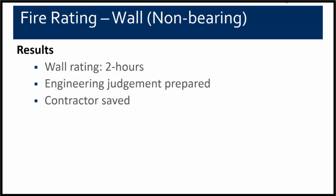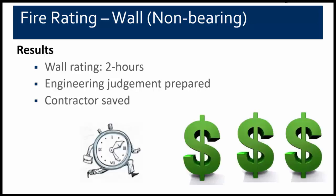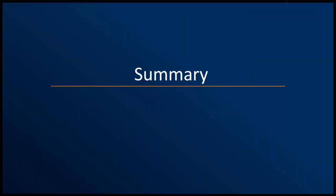The result was an engineering judgment and documented letter with the associated calculations showing that the existing wall assembly provides a minimum of a two-hour fire rating when exposed to a fire on either side. WJE got to show a client how multiple offices and service offerings, including the JTC, could work together to solve a building issue involving fire resistance ratings. The client and contractor were able to save time and money because additional work to bring the existing wall to the code-required two-hour fire resistance rating was not necessary. It should be noted that the windows in the wall were planned to be replaced with two-hour fire rated construction.